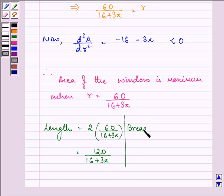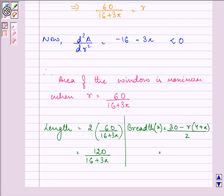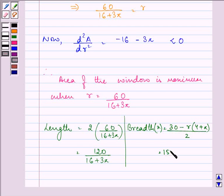And, the breadth, that is, x which we took initially, is coming out to be 30 minus r times (4 plus pi) upon 2, which is, 15 minus, substituting the value of r, and dividing it by 2.